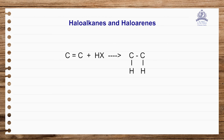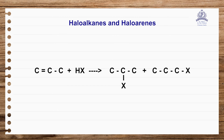One more preparatory method is the preparation of alkyl halides from alkenes. When hydrogen halides are reacted with alkenes, you get alkyl halides. With symmetrical alkenes this is straightforward, but with unsymmetrical alkenes two possibilities exist — this is governed by Markovnikov's rule.